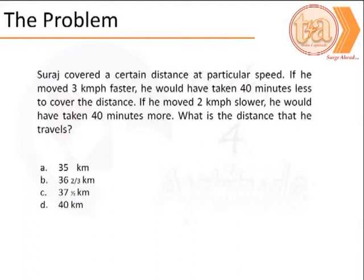Suraj covers a certain distance at a particular speed. If he moves 3 km per hour faster, he would take 40 minutes less to cover the distance. If he moved 2 km slower, he would have taken 40 minutes more.